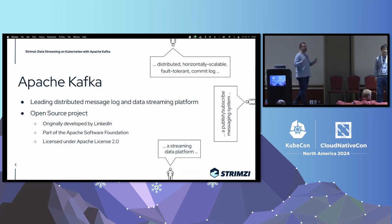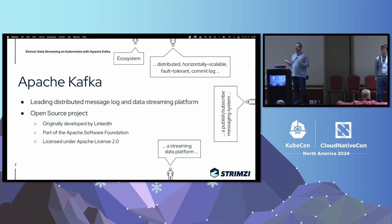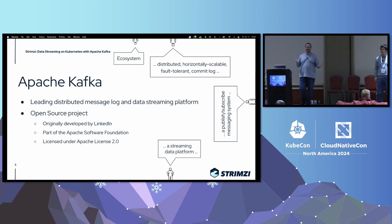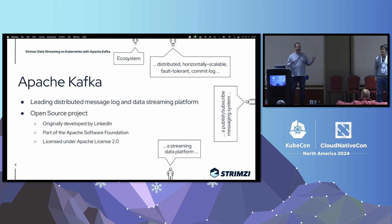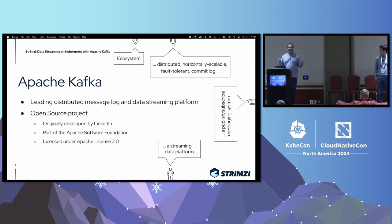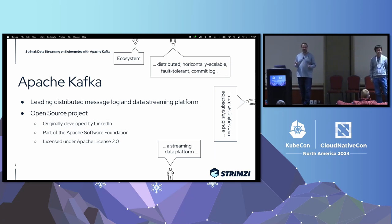Kafka is the leading distributed message log and data streaming platform. You can use it as a basis to build all various things — from integrations of microservices to event-driven architectures and event sourcing — but also for simpler tasks such as shipping metrics or logs between different systems. It has a great ecosystem of different connectors, clients, and so on. Kafka itself is a separate project originally founded by LinkedIn and is part of the Apache Software Foundation.